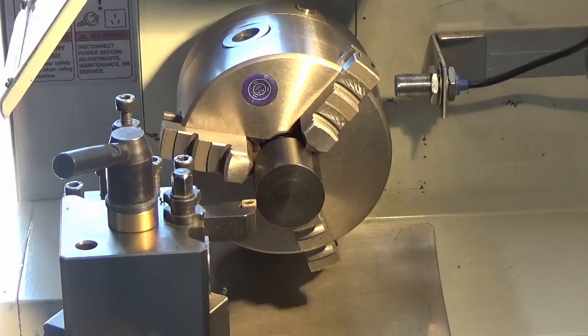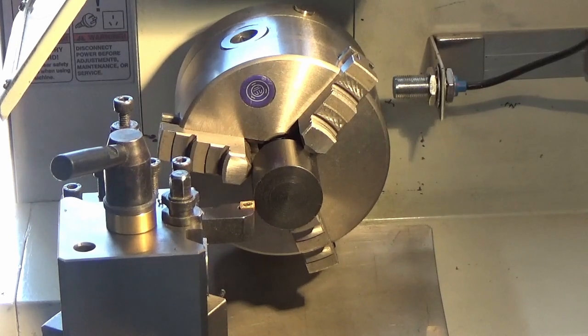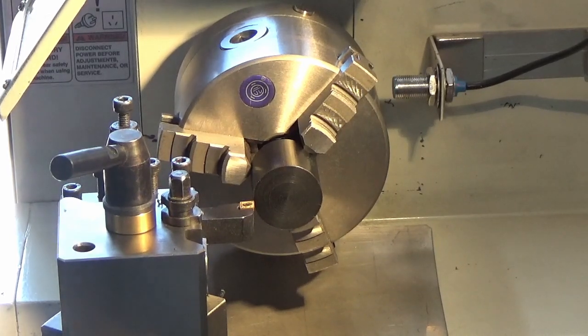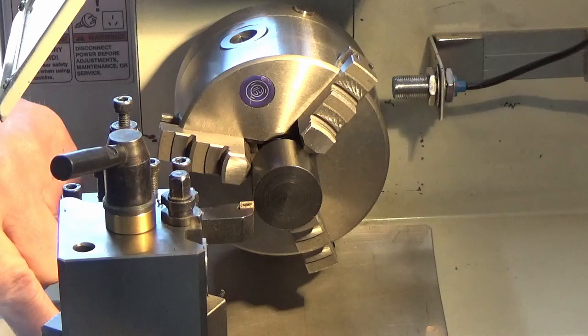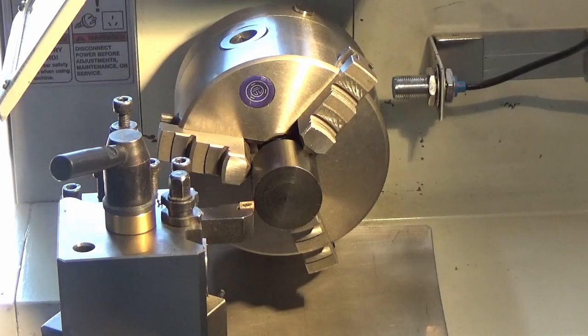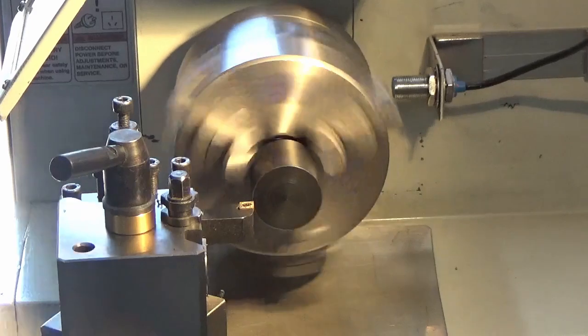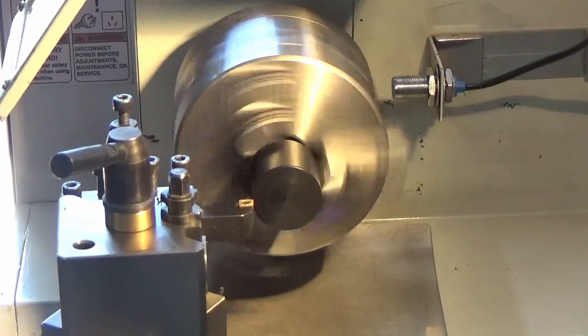So what we're going to do now is just line it up. We're taking about a millimetre cut each time, and we've got a stop here so it keeps coming back to the same point, so we don't have to worry about where we go.